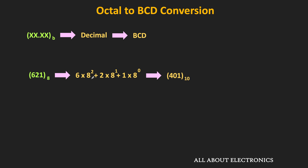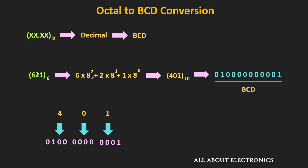So now let's do the decimal to BCD conversion. Let's replace each decimal digit with their corresponding BCD code. These are the equivalent BCD codes of the given decimal digits. If we combine all these groups, then this is the BCD equivalent code of the octal number 621.